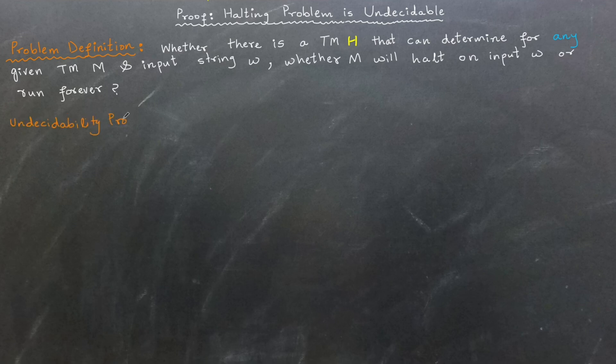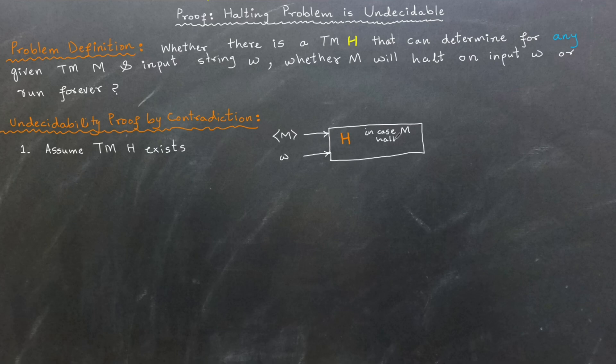Let's prove by contradiction that the halting problem is undecidable. Let's assume the opposite: that there exists a magical Turing machine H. H takes as input a description of a Turing machine M and input string W. In case M halts on the input W, H outputs yes. Otherwise, when M goes into an infinite loop, H outputs no.